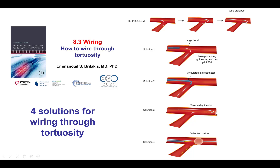The wire is advanced past, and then is pulled back towards the origin of the vessel we want to wire, and then the wire might actually go down. And finally, there is the option of putting a deflection balloon in the main vessel that deflects the wire and allows more pushing to direct the wire into the angulated branch.